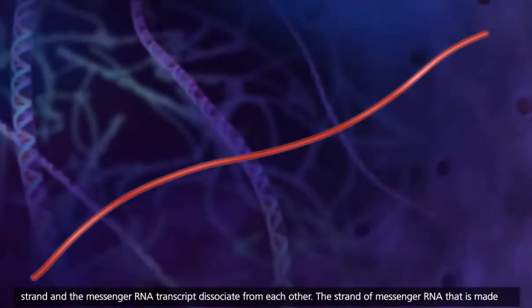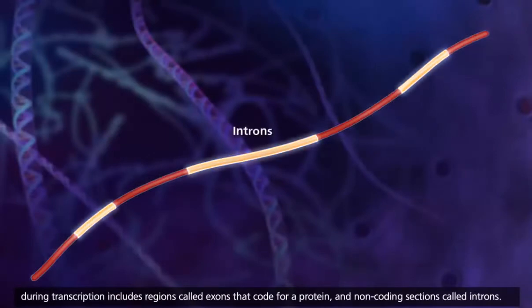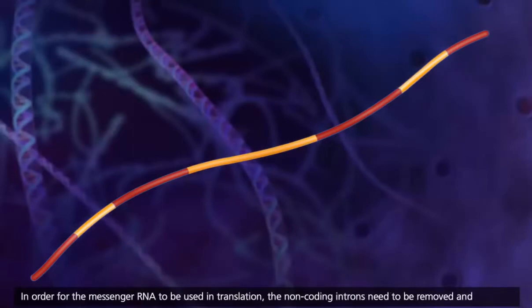The strand of messenger RNA that is made during transcription includes regions called exons that code for a protein, and non-coding sections called introns. In order for the messenger RNA to be used in translation, the non-coding introns need to be removed,